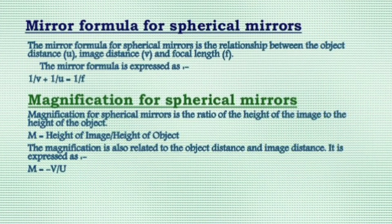Mirror formula for a spherical mirror: the mirror formula is the relationship between the object distance, image distance, and focal length. The mirror formula is 1/V + 1/U = 1/F.